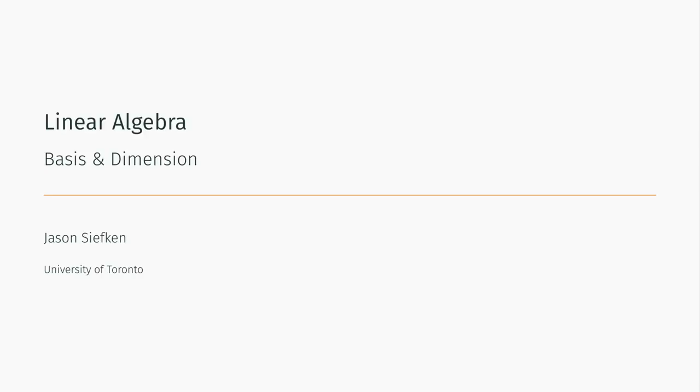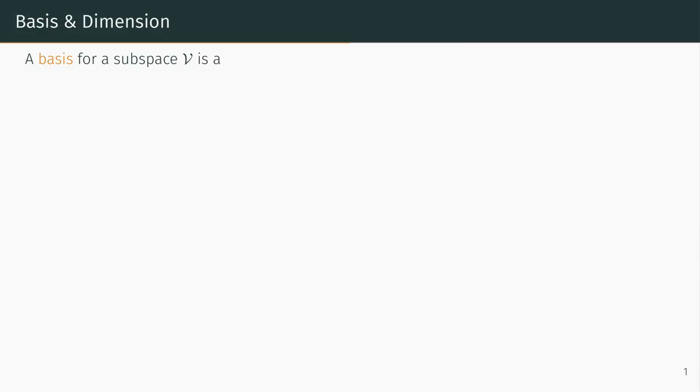In this video, we are going to discuss basis and dimension. A basis for a subspace V is a linearly independent set of vectors that spans V. The dimension of a subspace V is the number of vectors in a basis for V.